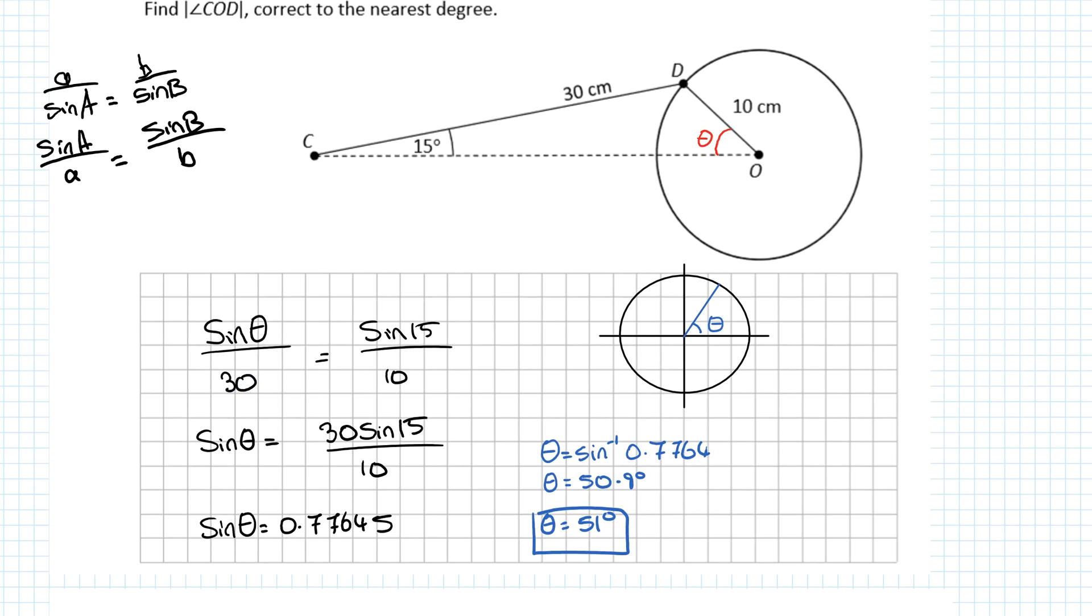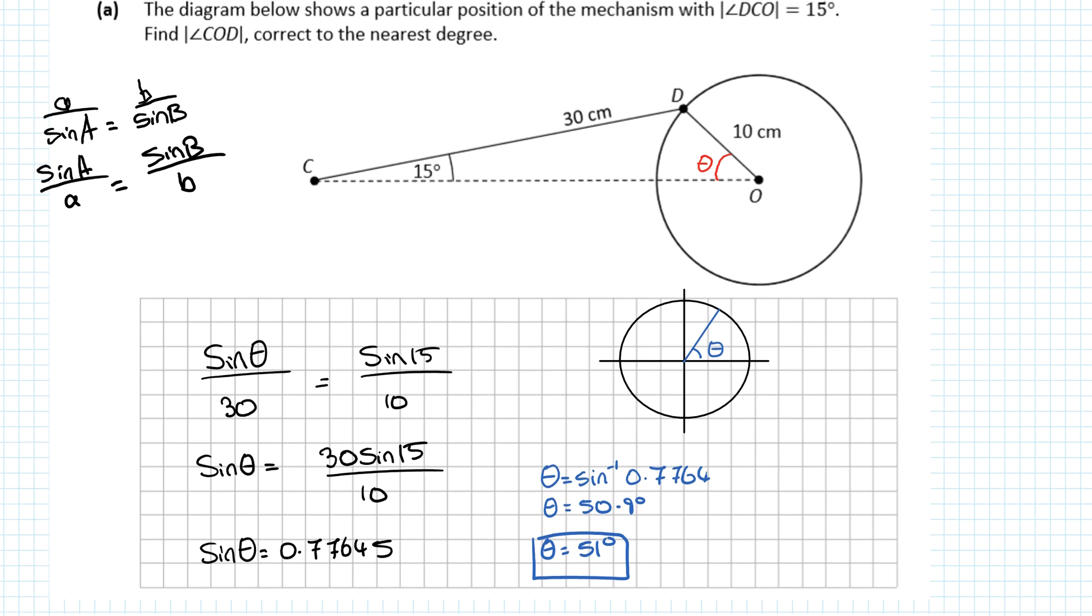I get a decimal as my answer, then take the sine inverse of it to get θ = 51°. Now, the question does not say there are multiple answers - no reference to plural. If there was, you'd check the unit circle. All sine, tan, cos - what quadrants are sine positive in? Sine is positive in the first and second quadrants.